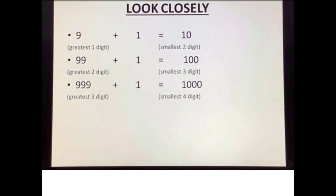Look at the picture. From 1 to 9 is the single digit number. 1 is the smallest number and 9 is the greatest number in one digit. 9 plus 1 is equal to 10, so the smallest two digit number is 10.